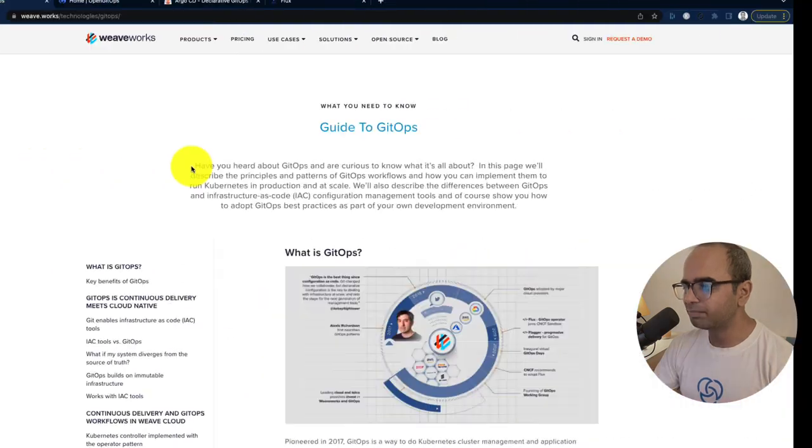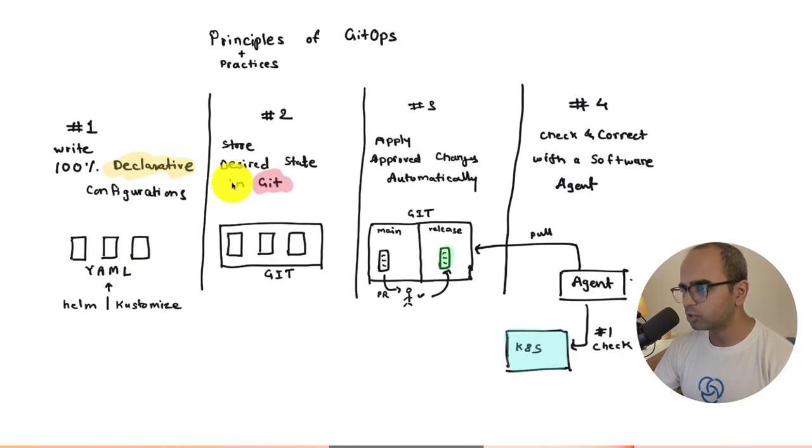So those are the four key principles of GitOps. And that helps you understand what is GitOps and how do you get started with it. Well, I hope that got you interested into GitOps. And if you are, you could either pick Flux or ArgoCD. Both are interesting technologies, use slightly different approaches, but both are interesting technologies to get started with. And I have a free course linked below, which can help you get a better understanding of what is GitOps with a demonstration. And that is with Flux. So you may want to check that out as well.